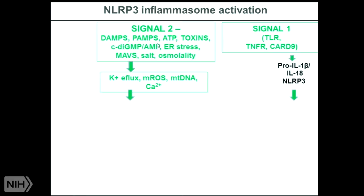But Signal 1 is not enough — you need Signal 2. I always joke that in the inflammasome field, you basically look at the cells wrong and they have Signal 2. This could be DAMPs — the very early and prophetic work of Polly Matzinger at NIH — that is, damage-associated or danger-associated molecular patterns, as well as PAMPs, toxins, dinucleotides, ER stress, MAVS protein, salt, osmolality, and others. Some argue potassium efflux is the most important factor; many of us have also seen mitochondrial ROS, calcium, and mitochondrial DNA release upstream of inflammasome activation.